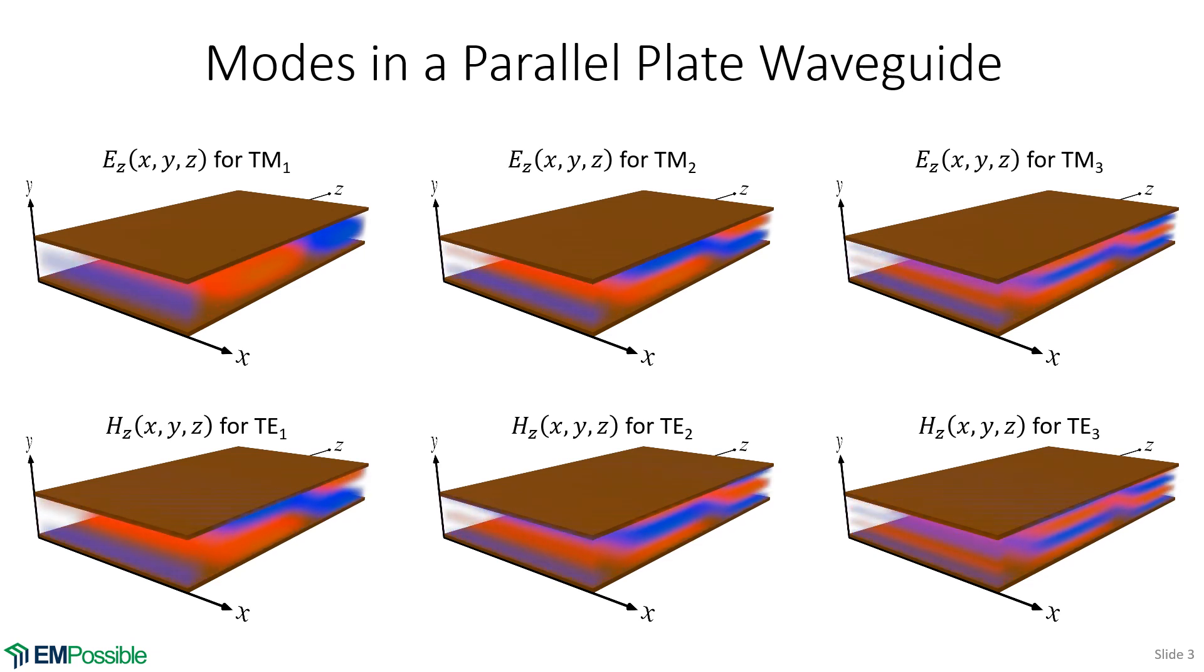So the first order mode in the x direction, notice one bright spot vertically, and that'll become more meaningful later on when we start labeling these. And we'll label that as TM1. TM2 mode, well, there's two bright spots, and they're 180 degrees out of phase, thus the red and blue colors. TM3, three bright spots vertically. And you can imagine the TM4, 5, 6, the TM6 would have six bright spots vertically. And so those are the higher order modes.